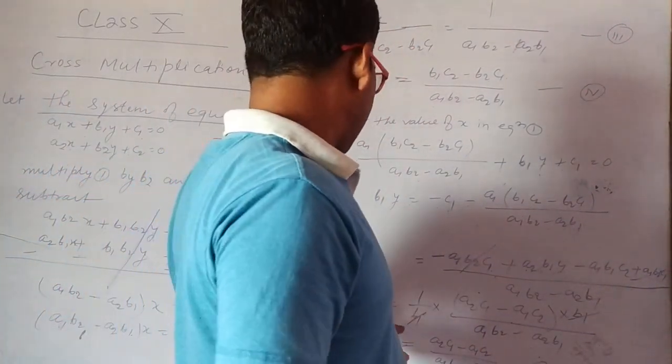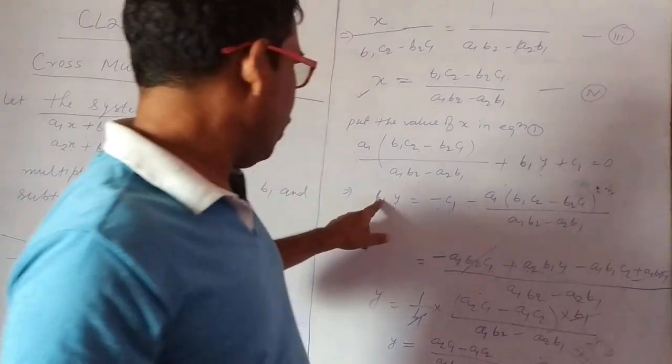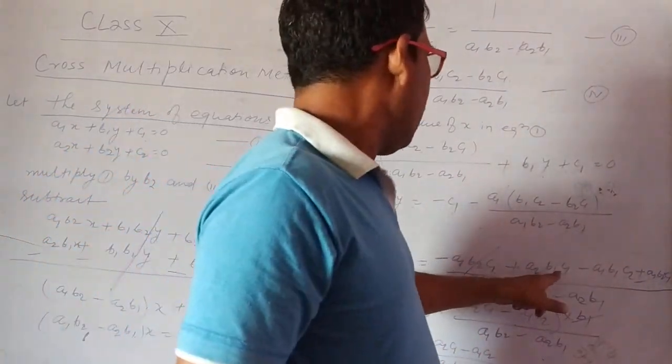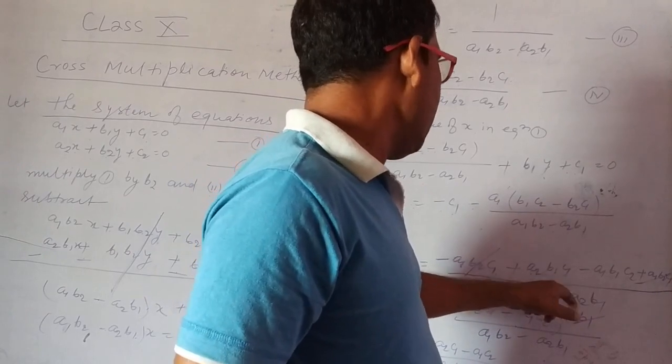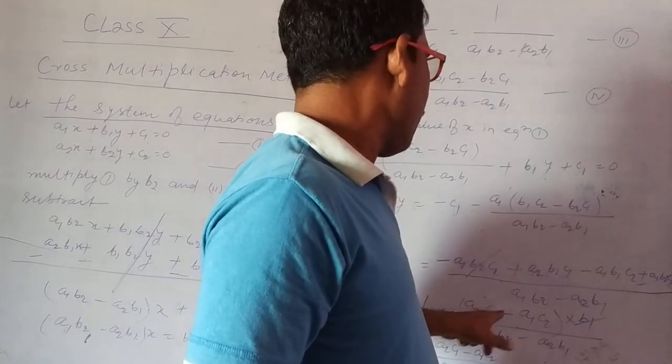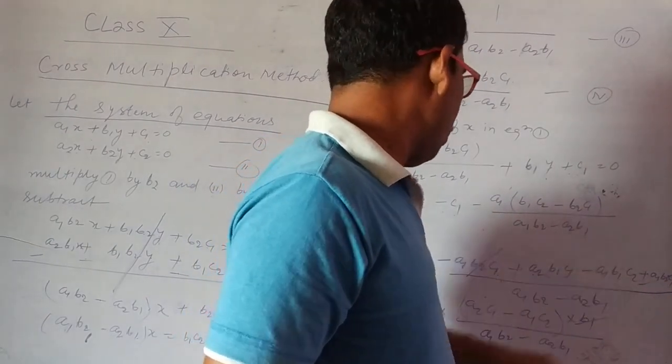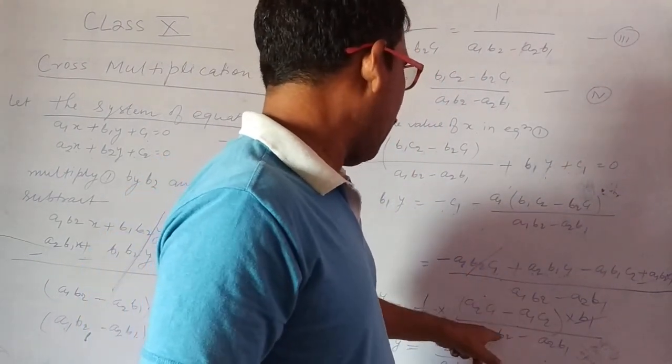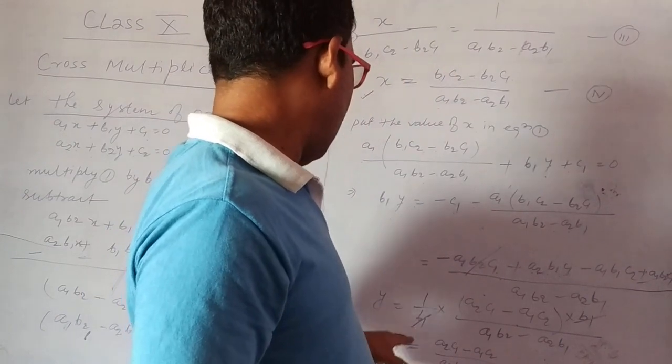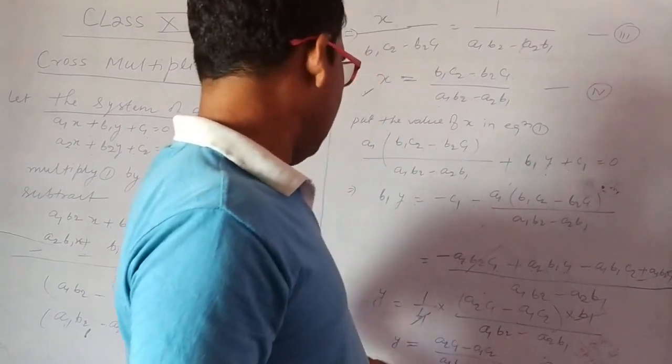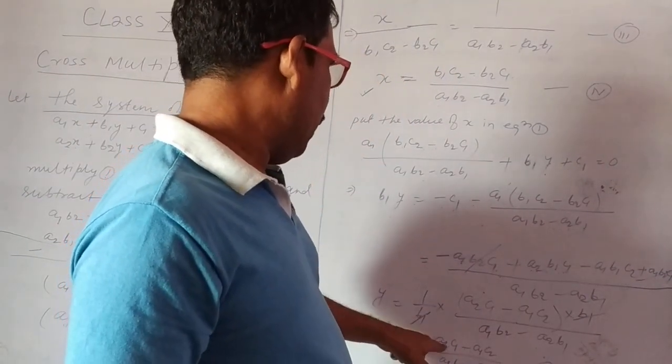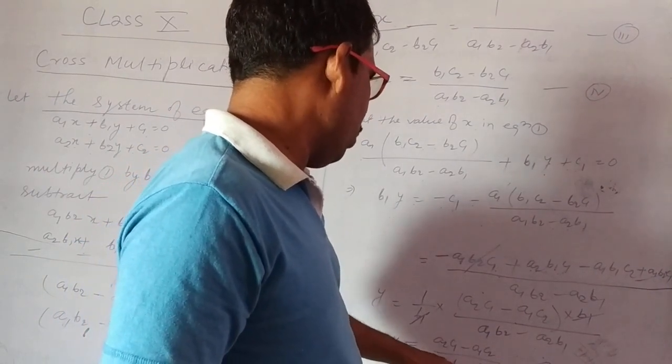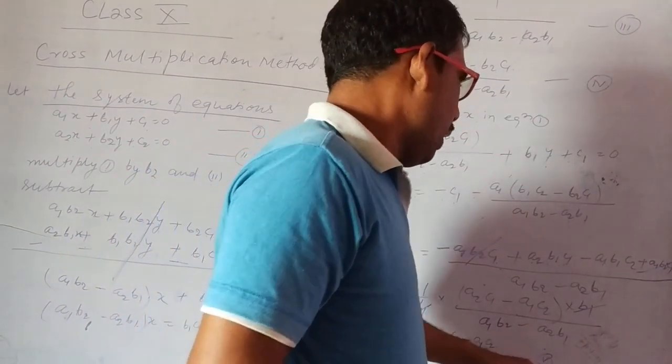Then we have y equal to, this b1, 1 by b1. Here c1b1 is taken as common, then a2c1 minus a1c2, b1 common, by a1b2 minus a2b1. And this b1 cancels by b1, then we get y equal to a2c1 minus a1c2 divided by a1b2 minus a2b1, considered as equation 5.